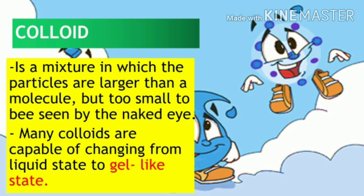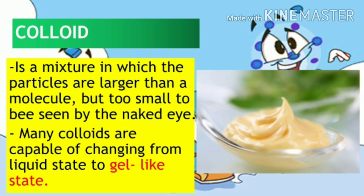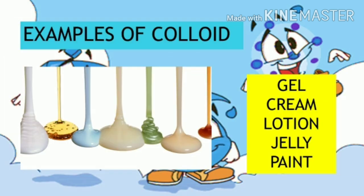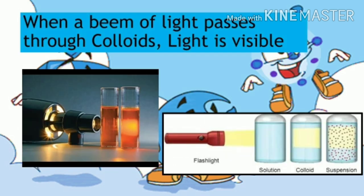Many colloids are capable of changing from a liquid state to a gel-like state. Examples of colloids are gel, cream, lotion, jelly, paint, and more. Another way of identifying if a mixture is a colloid is when a beam of light passes through it, the light is visible, as shown by the arrow.